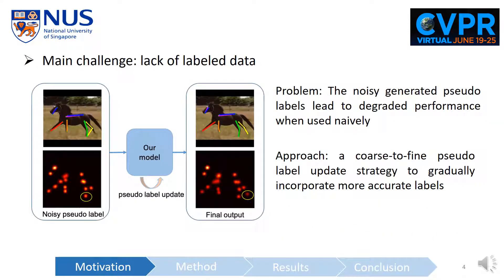The problem here is that the generated pseudo labels are always noisy and lead to degraded performance when directly used for training. So in this work, we propose a coarse-to-fine pseudo label updating strategy to gradually incorporate more accurate labels.